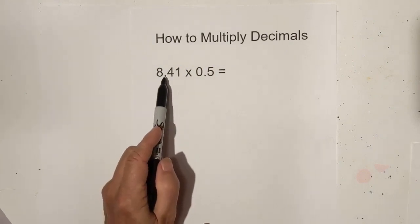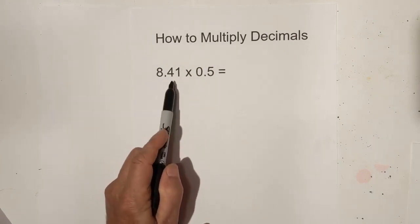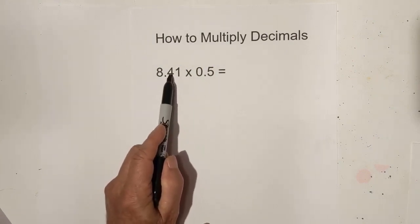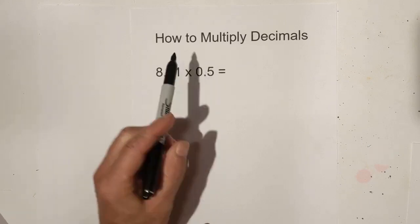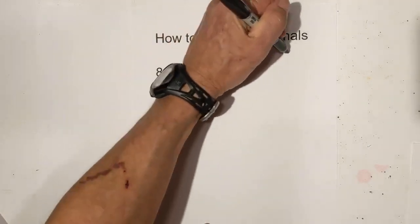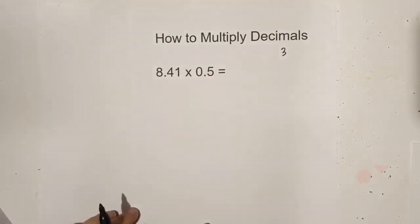The first thing you do is count how many numbers are to the right of the decimal point. We have one, two, then three — so I'm going to write a three here. That's step one.